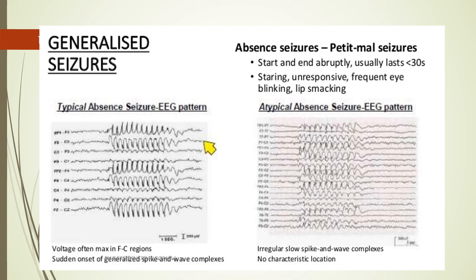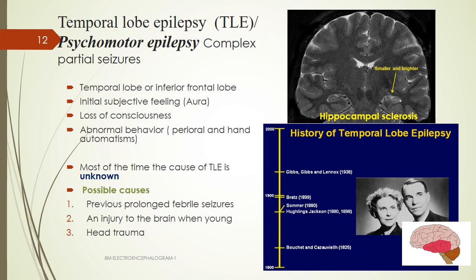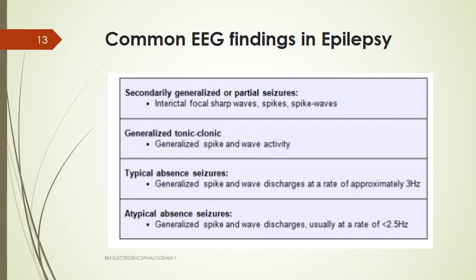For focal seizures, Jacksonian epilepsy involves brief alterations in movement, sensation, or nerve function caused by abnormal electrical activity in a localized brain area. Temporal lobe epilepsy, also called psychomotor epilepsy or complex partial seizure, involves the temporal lobe or inferior frontal lobe. An aura is present, followed by loss of consciousness and abnormal behavior called automatisms. Possible causes include prolonged febrile seizures, early brain injury, or head trauma.